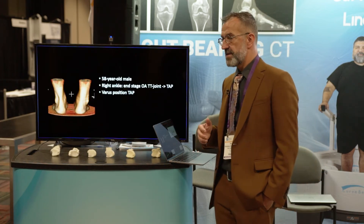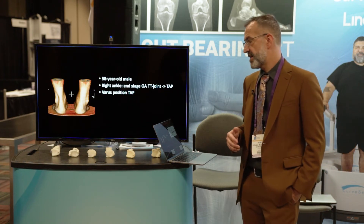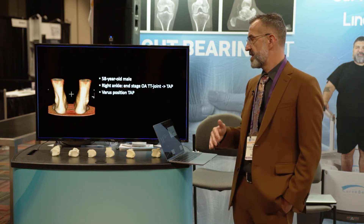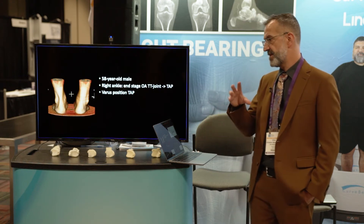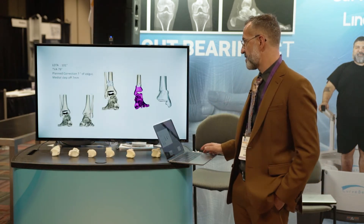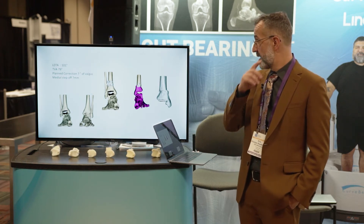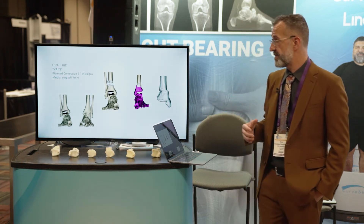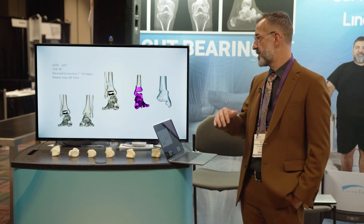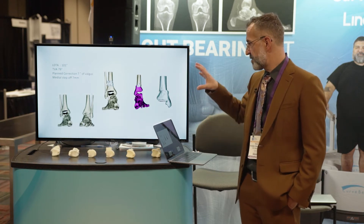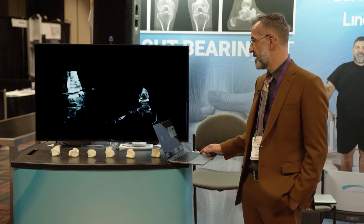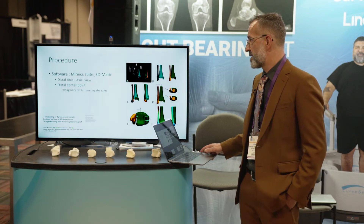Another indication is ankle replacement surgery where the prosthesis is positioned in varus or valgus. Since the tibial and talar components are parallel, it's a congruent joint — and very painful. Again, we entered the patient into the software, planned the dome osteotomy with a reduction guide, and the post-operative X-ray showed a completely healed, nicely balanced ankle prosthesis.